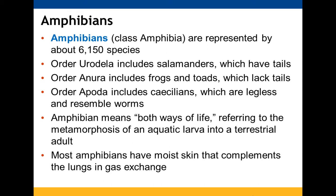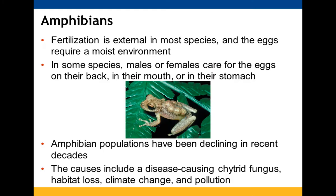Amphibians are represented by many, many species. There are a few orders: the Urodela, which are the salamanders; the Anura, which are the frogs and toads; and the Gymnophiona or Apoda, which are the caecilians. The name 'amphibian' means both ways of life — both water and land, using both skin and lungs for gas exchange. Fertilization tends to be external, and eggs require a wet environment. Some species carry their eggs on their back. Amphibian populations are declining due to fungi, loss of habitat, climate change, and pollution.